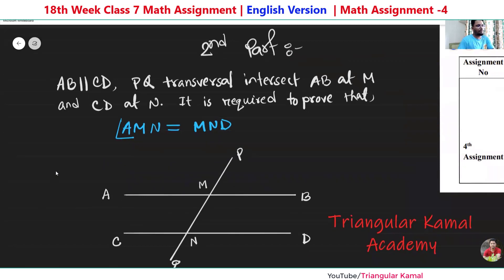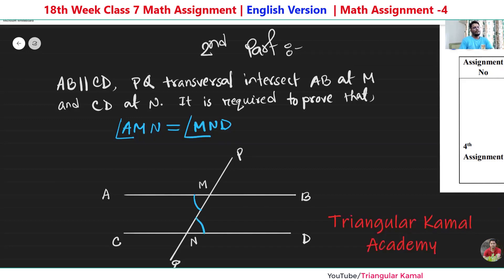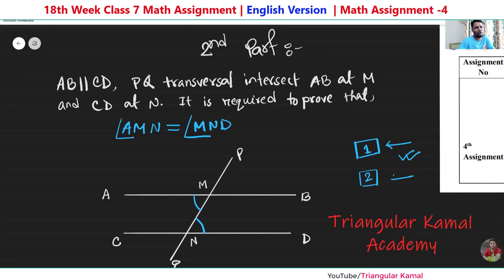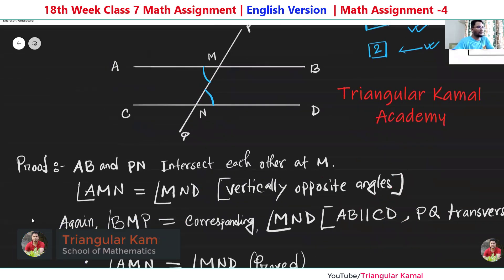For the second part of question one, we need to prove that alternate angles are the same. AB and CD are parallel lines; PQ intersects AB at point M and CD at point N. We are required to prove that angle AMN equals angle MND. These are alternate angles and we need to prove it geometrically. The question gives two important instructions: first, use vertically opposite angles, and second, apply the concept of corresponding angles. Using these two pieces of information, we will prove the alternate angle relationship.